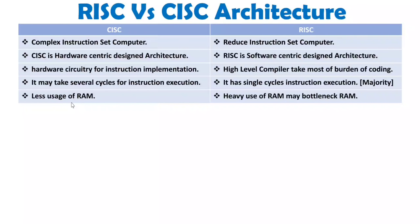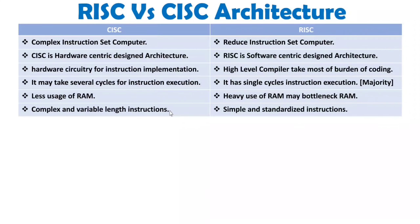When we talk about accessing RAM, CISC architecture uses less RAM, while with RISC there is heavy RAM usage — it accesses RAM heavily depending on how many programs are being executed. When we talk about instructions, with CISC there are complex instructions and the length of instructions varies by category. With RISC architecture, instructions are simple and standardized — there are no variable-length instructions. Instructions perform very basic tasks, while with CISC, complex instructions with variable length are present.